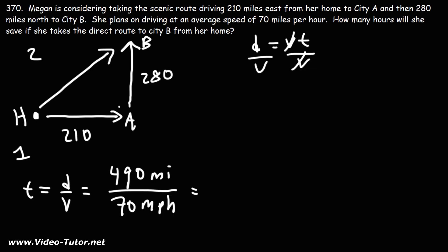490 divided by 70, we could cancel the zeros, so it becomes 49 divided by 7, and that's 7. So it's going to take her 7 hours to get to City B if she takes the scenic route.